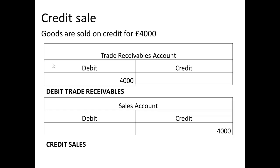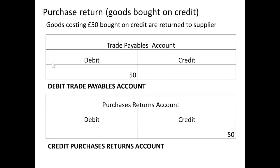If we have a credit sale — goods sold on credit for £4,000 — we will debit trade receivables, because that is the money we are owed, and we will credit sales in the normal way.